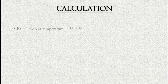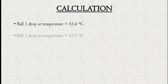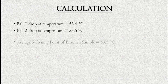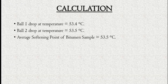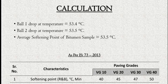Calculation of softening point test: record Ball 1 temperature and Ball 2 temperature. Calculate the average softening point of the bitumen sample. As per IS 73, refer to the types of bitumen grade and the minimum temperature of the softening point.